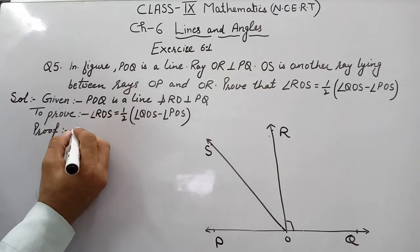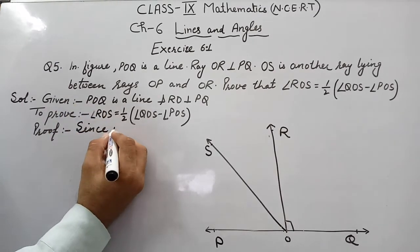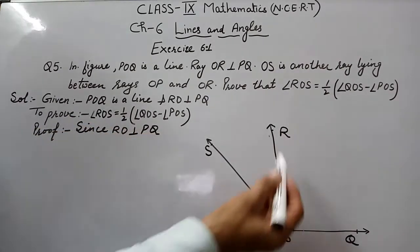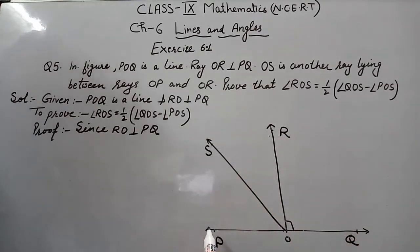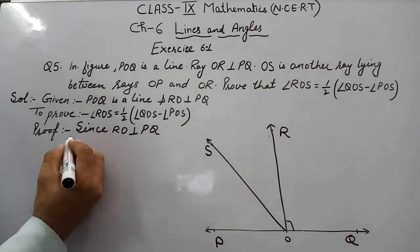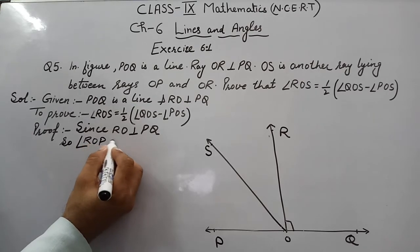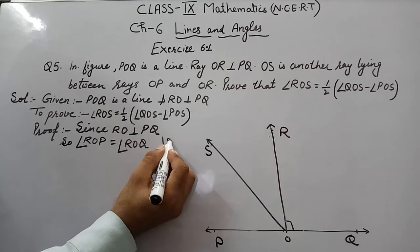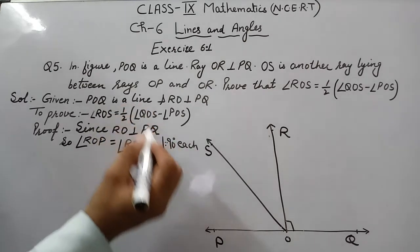First of all, we will write that since RO is perpendicular to PQ, therefore angle ROQ is equal to angle ROP, because both will be 90 degrees each. You can write this way.